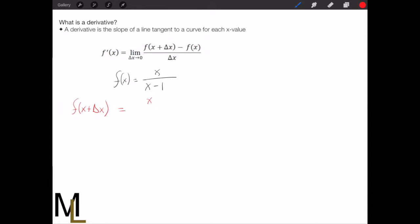In this case we're going to get x plus delta x over x plus delta x minus 1, because we simply replace everywhere that there is an x in the function with the x plus delta x.